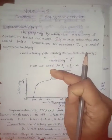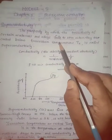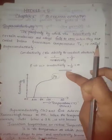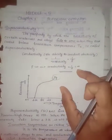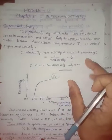When the material is cooled to a particular temperature, the resistivity is zero and at the same time conductivity is infinity. Then we observe a free flow of current. That is Superconductivity.